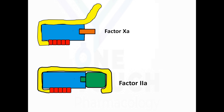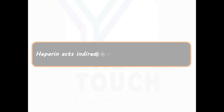Thus heparin acts by inhibiting both factor IIa as well as factor Xa — indirectly, because it doesn't directly inhibit these factors. It inhibits factor IIa and factor Xa by indirectly activating antithrombin III.